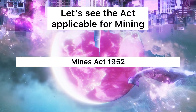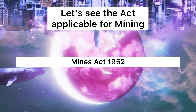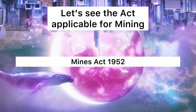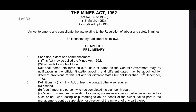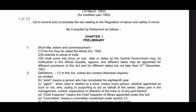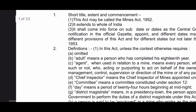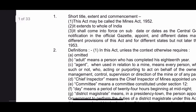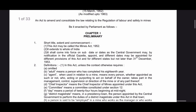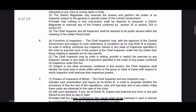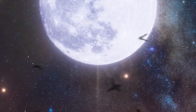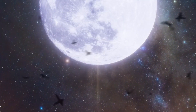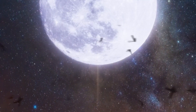Now let's see the act applicable for mining — this is the Mines Act 1952. The act has several chapters: Chapter 1 is Preliminary, and each chapter is divided into sections. Chapter 2 covers Inspectors and Certifying Surgeons, Chapter 3 follows, and so on. The rules, regulations, and amendments applicable for mining are given on the DGMS website.